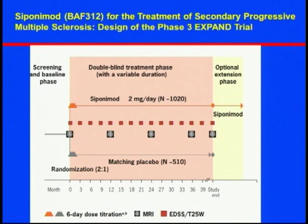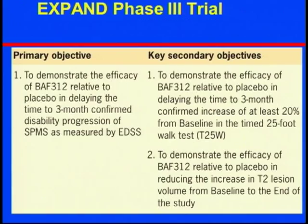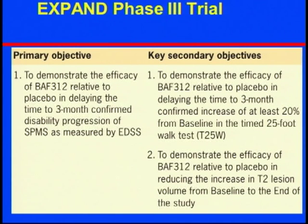It's well-designed — double-blind — and you'll be seen more often with periodic neurological exams and MRIs. The primary objective of the study is to demonstrate efficacy compared to placebo in delaying three-month confirmed disability progression.